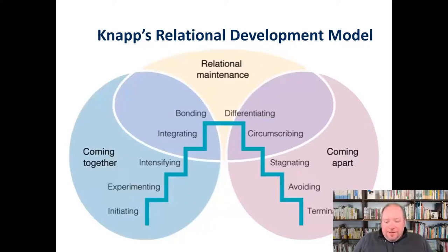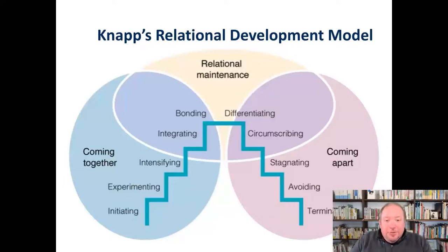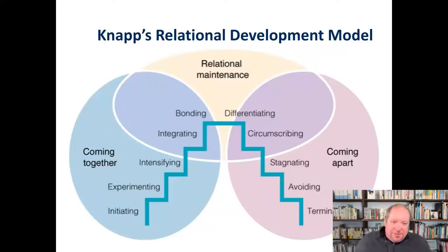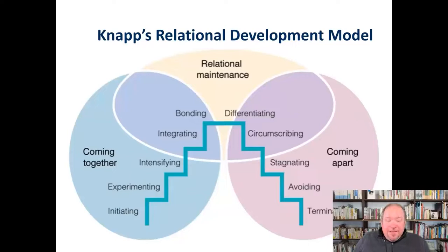Just because you meet someone, it could fizzle out at any point. Likewise, you could get to the bonding and differentiating stage at the very top, which would indicate a really close, significant relationship, and it may remain there for the rest of your life — you may never get into circumscribing, stagnating, and termination. Every relationship is a little different and will see at least some of these stages.